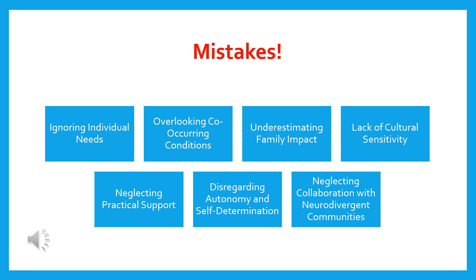The second mistake is overlooking co-occurring conditions. Neurodivergent individuals may have co-occurring conditions or comorbidities that require attention and support. It's really important to be aware of the potential presence of other conditions such as anxiety, depression, and sensory processing issues, and address them alongside the neurodivergent traits.